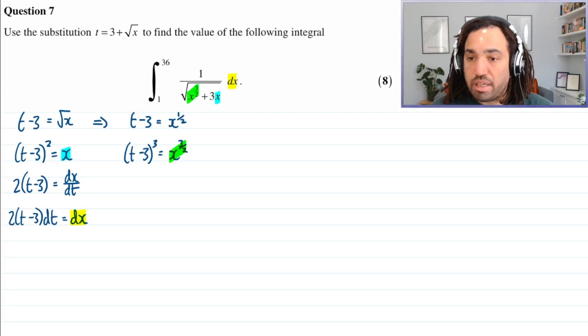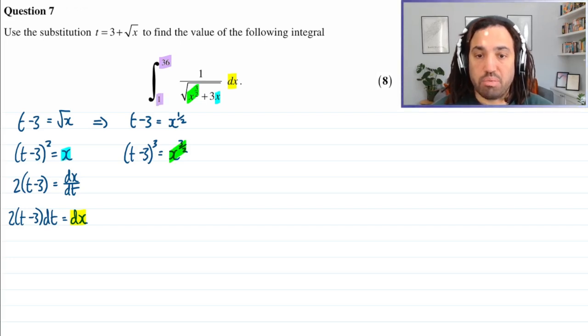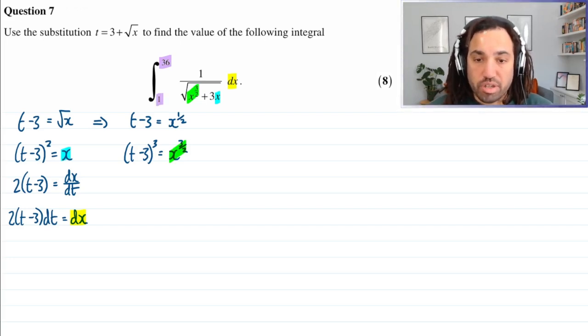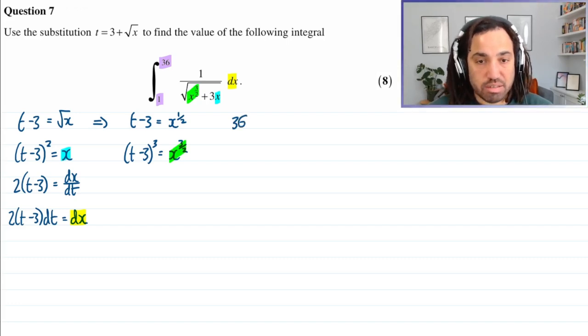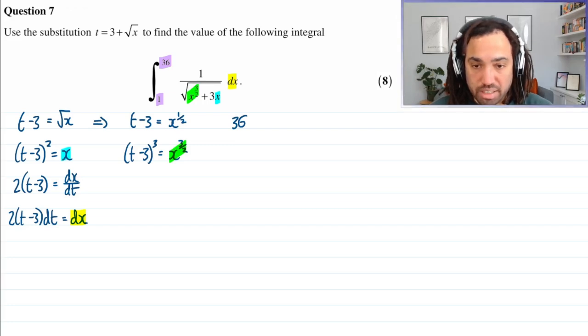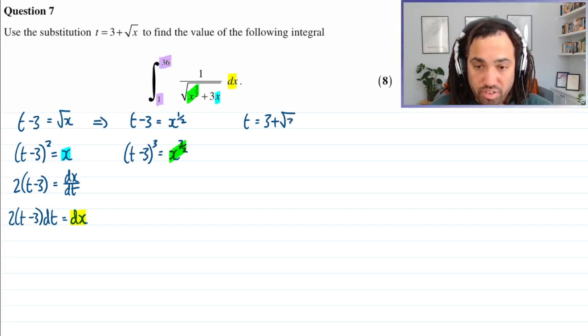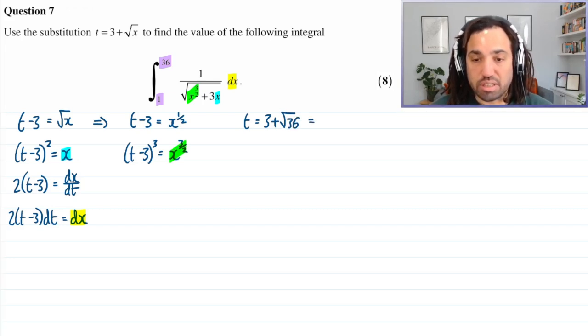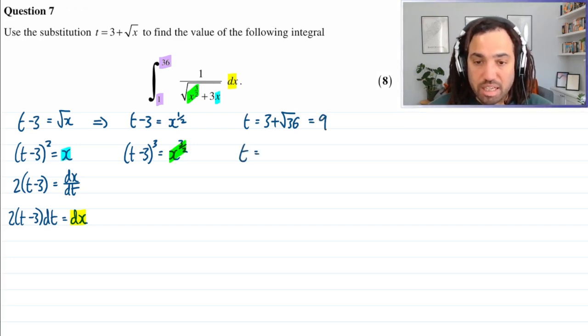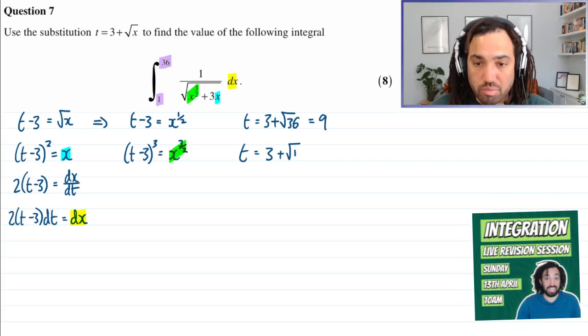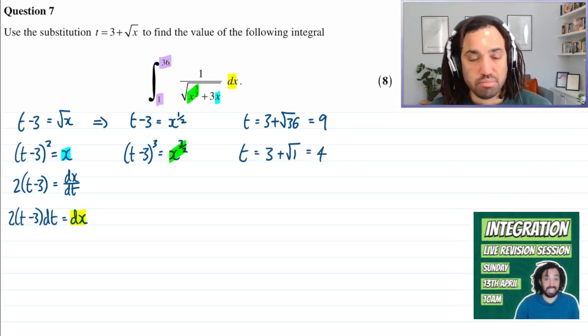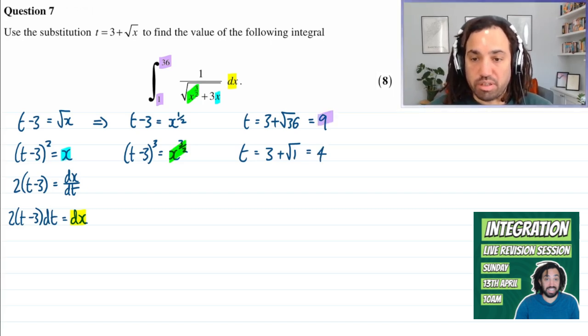But we also need to sub in the limits. 36 and 1, they need to be swapped out as well. So we will write 36 is x. And we need to find t, don't we? Yes. So let's just write t is equal to 3 plus the square root of 36 is x. And this gives us 3 plus 6, which is 9. And then the other t value will be 3 plus the square root of 1, which is just 4. Okay, great. So we've got our new t values.